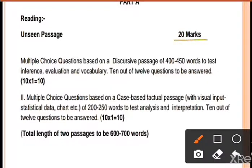The reading section carries 20 marks. The first question is an Unseen Passage, a discursive type passage of 400-450 words. Here 12 questions will be asked, out of which 10 need to be attempted. These 10 questions carry 1 mark each, totaling 10 marks.